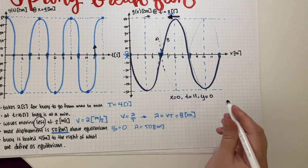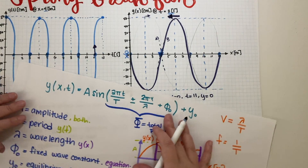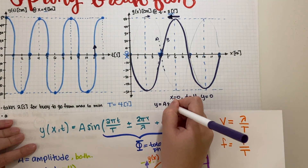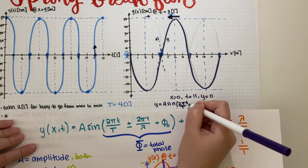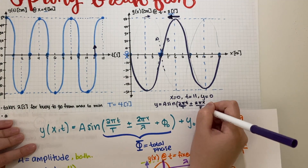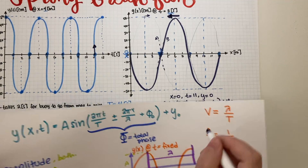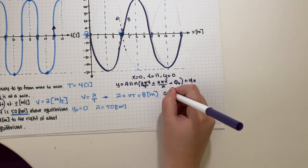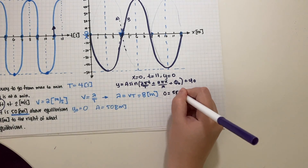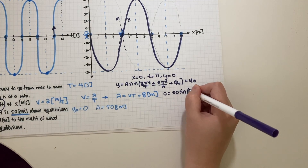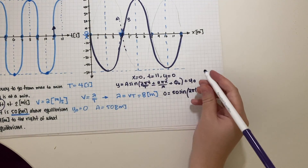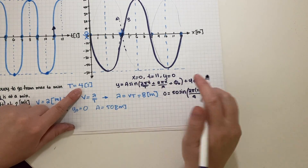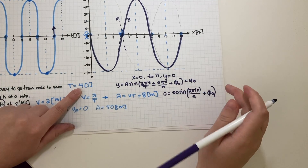Writing the generic wave equation and substituting: y = A sin(2πt/T + 2πx/λ + φ). Plugging in y = 0, A = 50, t = 11, T = 4, and x = 0 gives: 0 = 50 sin(2π·11/4 + φ).